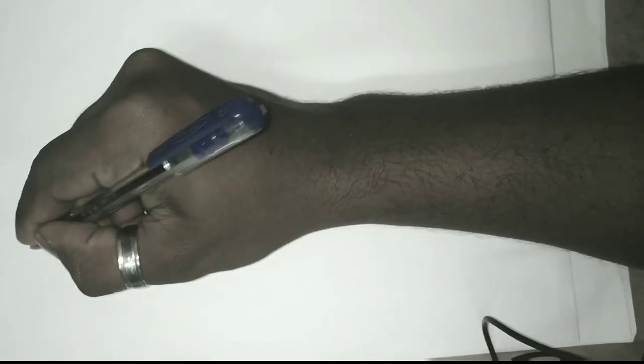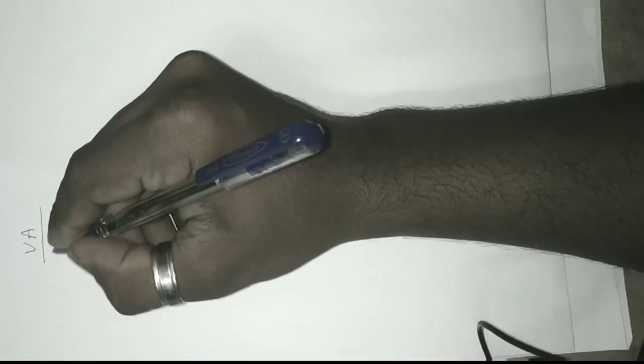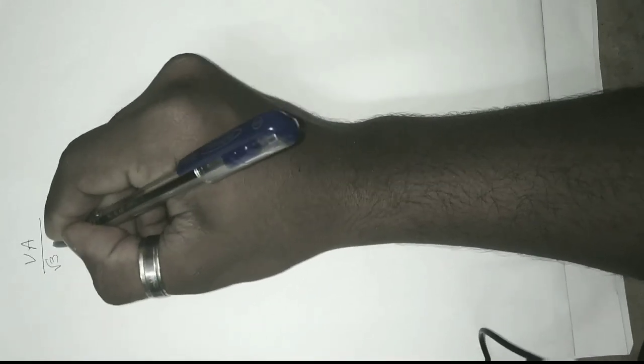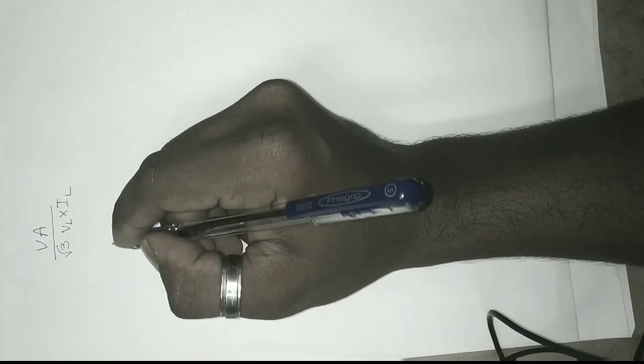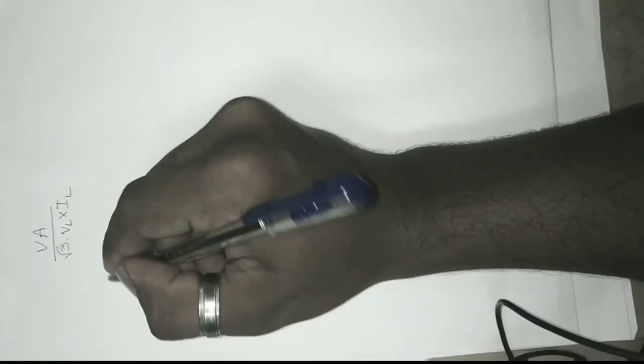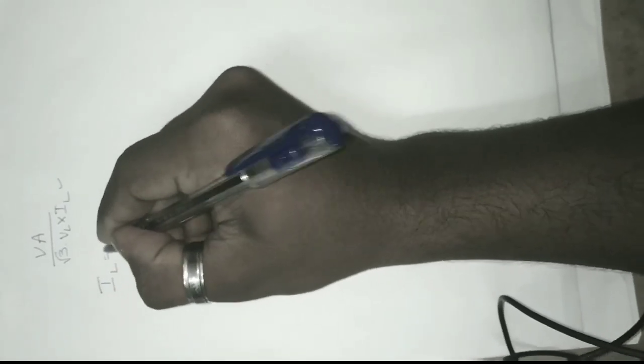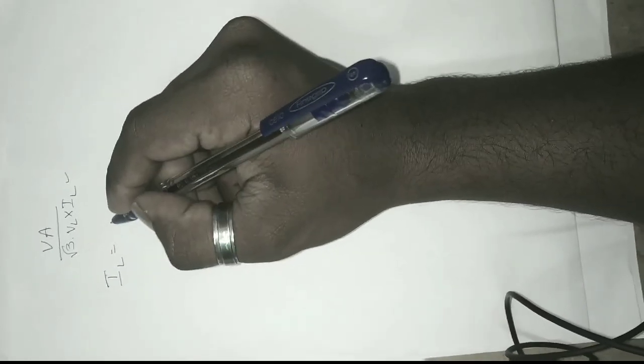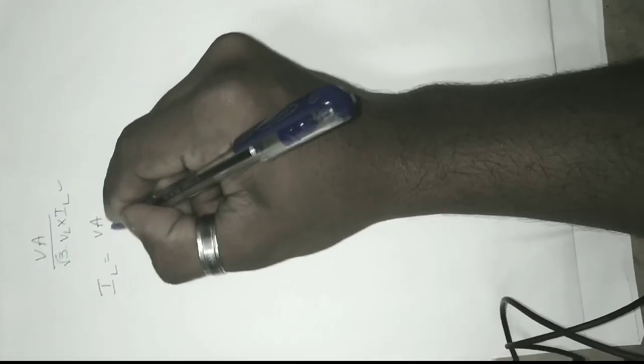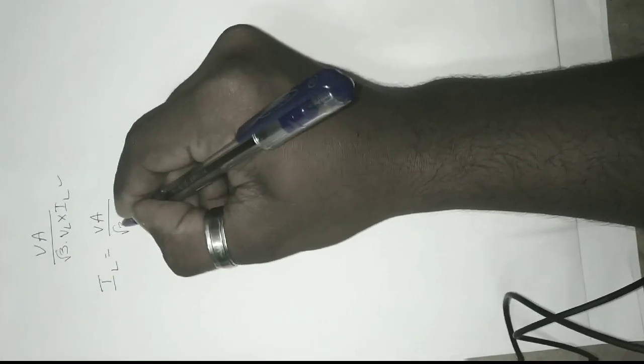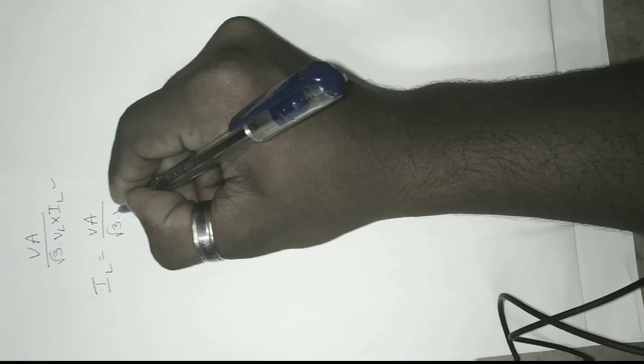First, we have to know the standard formula for this: VA by root 3 into VL. Here we want to know the current in the high side, so current IL is equal to VA by root 3 into VL.